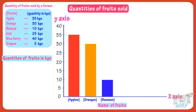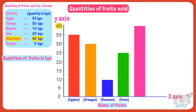The next fruit is kiwi — the quantity sold is 25 kgs, so make a rectangular bar up to the mark of 25 and label it with kiwi. Next fruit is blueberry — its quantity sold is 40 kgs, so make a rectangular bar up to the mark of 40 and label it with blueberry. Next fruit is grapes — the quantity sold is 5 kgs, so make a rectangular bar up to the mark of 5 and label it with grapes. And our bar graph is ready.